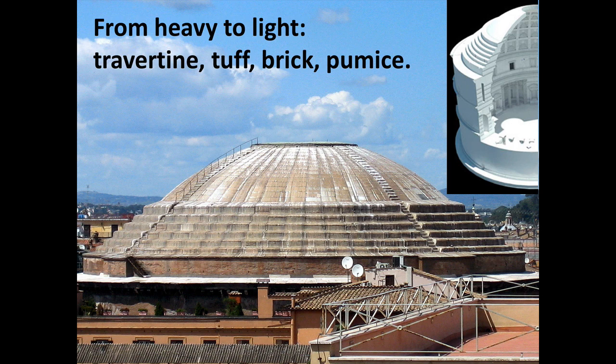Next comes tuff, a compressed volcanic ash and a really favored building material throughout the Roman Empire because it was relatively easy to cut and work, making it suitable for rapid wall construction. The Romans also used a lot of bricks, which were slightly less dense and heavy than tuff. And then finally pumice — essentially the foam from a volcanic eruption with lots of trapped gases — which actually floats.